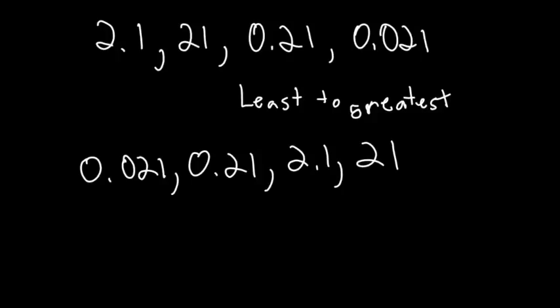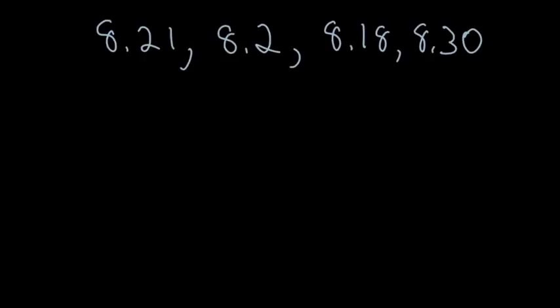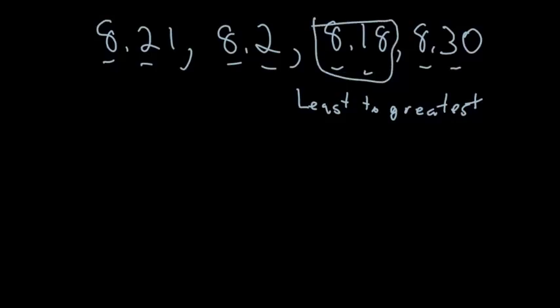All right, so one more list of numbers. We're going to put them in order. Again, we'll go least to greatest. So on this we need to look at the numbers. First one, our whole number for all of these is eight. So you look at the next digit. I got a two, a two, a one, and a three. Well one is the lowest, so that's going to be my first number going least to greatest: eight and eighteen hundredths.